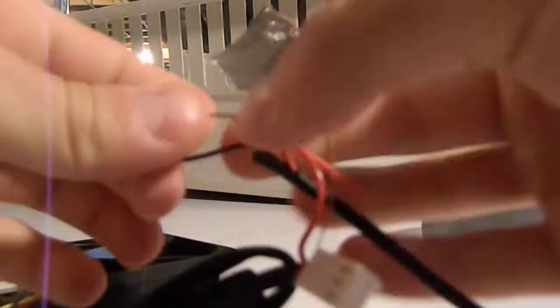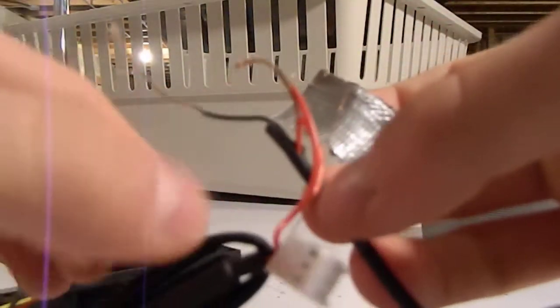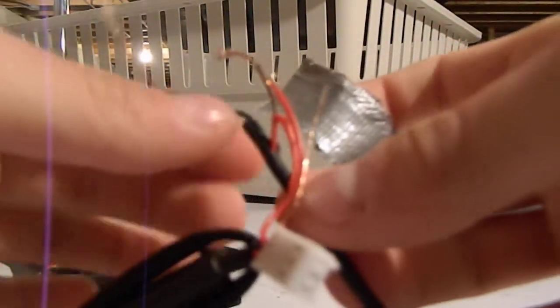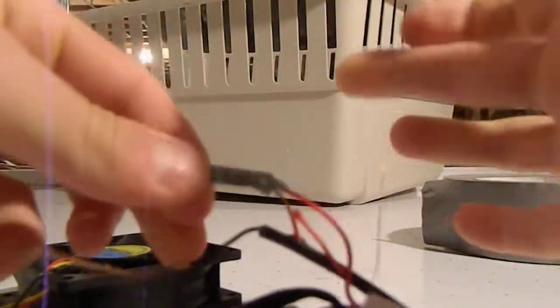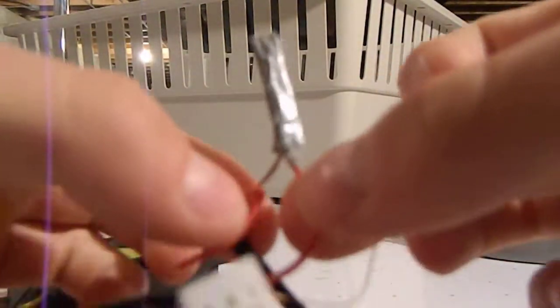And then, after that's all twisted, you can see it's locked in there. You're just going to take your tape, boom, and then make it tight, twist it around a few times. So those two are all nice and taped together. So now, as you can see, my two red wires are on one piece of tape.